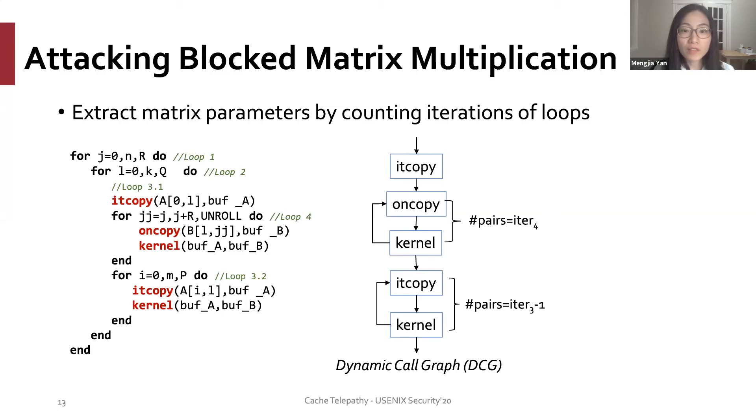the number of pairs of consecutive invocations of the itcopy and kernel functions equals the number of iterations of loop 3 minus 1. And the number of occurrences of such a pattern equals the product of iteration 1 and iteration 2. Therefore, we can use side channel attacks to monitor addresses in the three functions to determine the number of iterations.